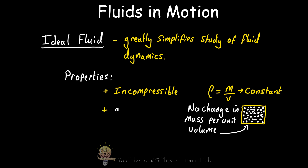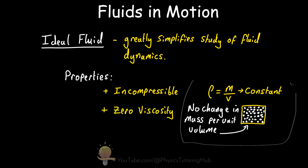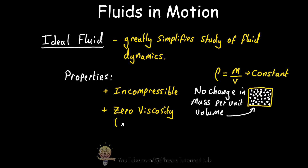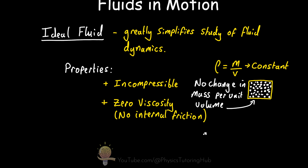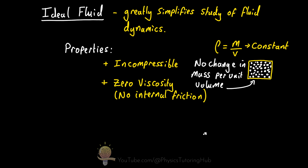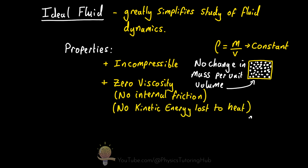An ideal fluid also has zero viscosity — it's non-viscous. Viscosity simply refers to the amount of internal friction within the fluid. For example, honey has a higher viscosity than water and therefore flows more slowly. When a viscous fluid flows, part of the kinetic energy is transformed into internal energy due to internal friction. But an ideal fluid has zero viscosity, meaning molecules slide effortlessly past one another without losing kinetic energy to heat.